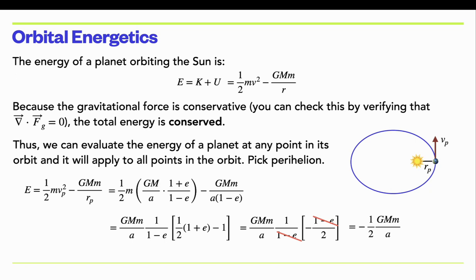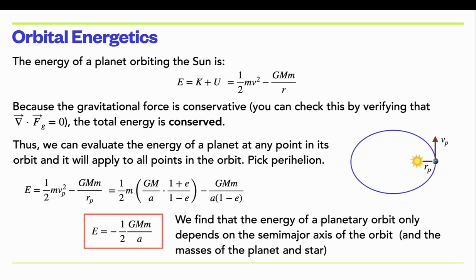We see that the total energy is just −½GMm over the semi-major axis. So the energy of an elliptical orbit only depends on the semi-major axis. It doesn't depend on the eccentricity, or semi-minor axis, or any of those other orbital parameters — just the semi-major axis.